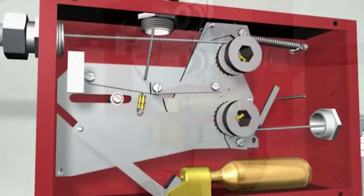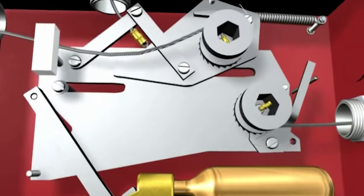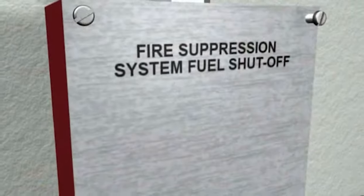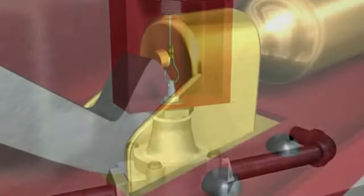The Kitchen Knight 2 system can also be actuated by a manual pull station. This action initiates electric power shutdown and the mechanical control head to release tension to a separate wire that triggers the gas valve to shut off.